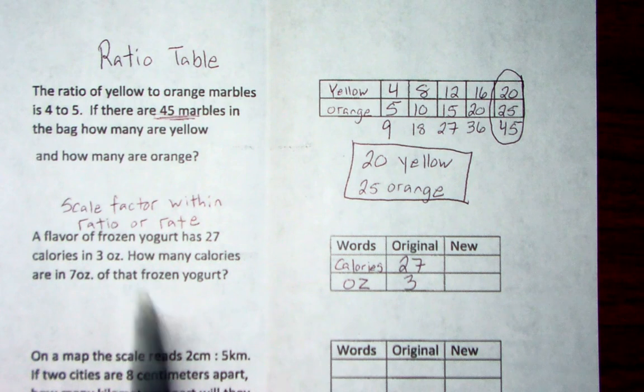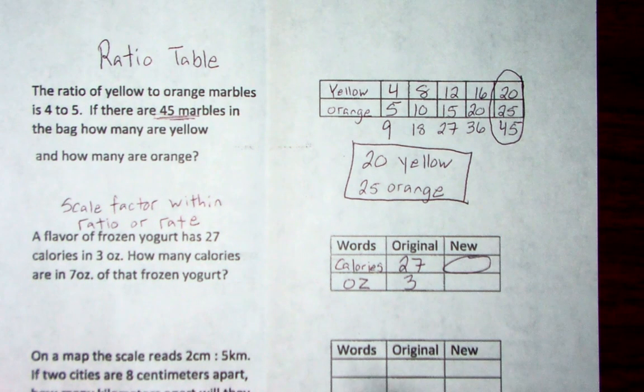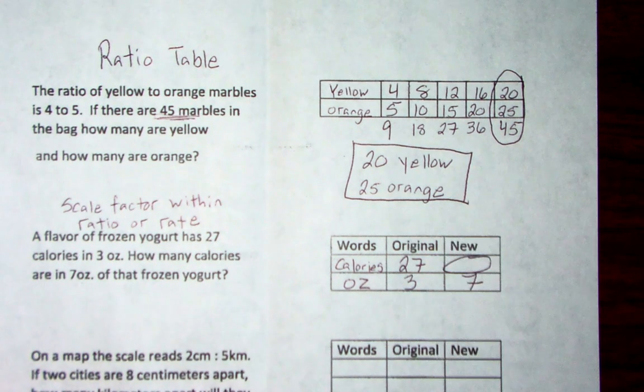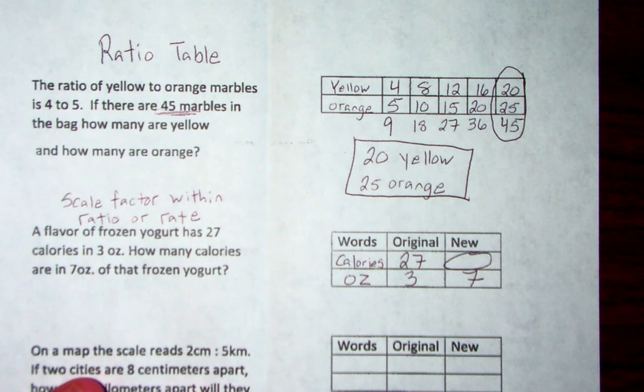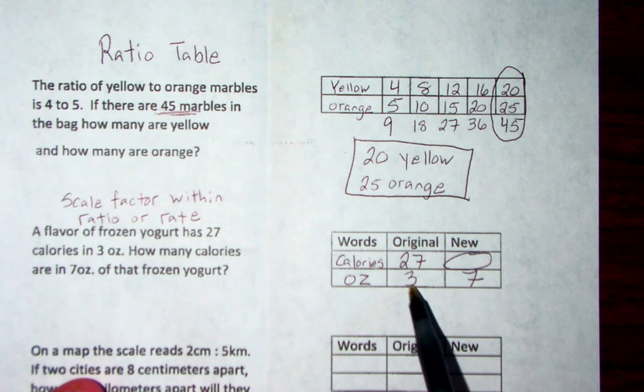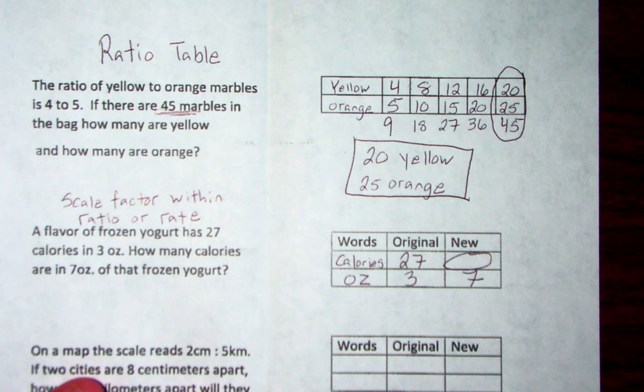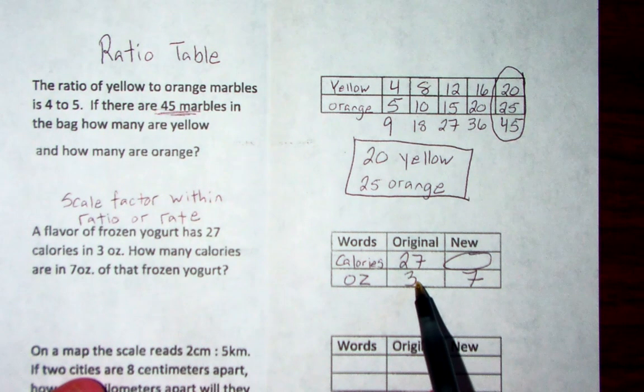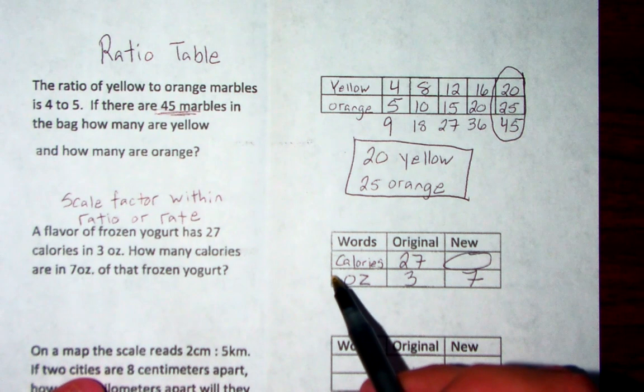Now the question says how many calories, so this is what we're solving for, if you have 7 ounces. Okay, now we're going to have to figure out our scale factor. Most times when we do scale factor we go from left to right, right? But that's not the only way you can do it. You can go from left to right, you can go from right to left, you can go from up to down, or you can go from down to up.